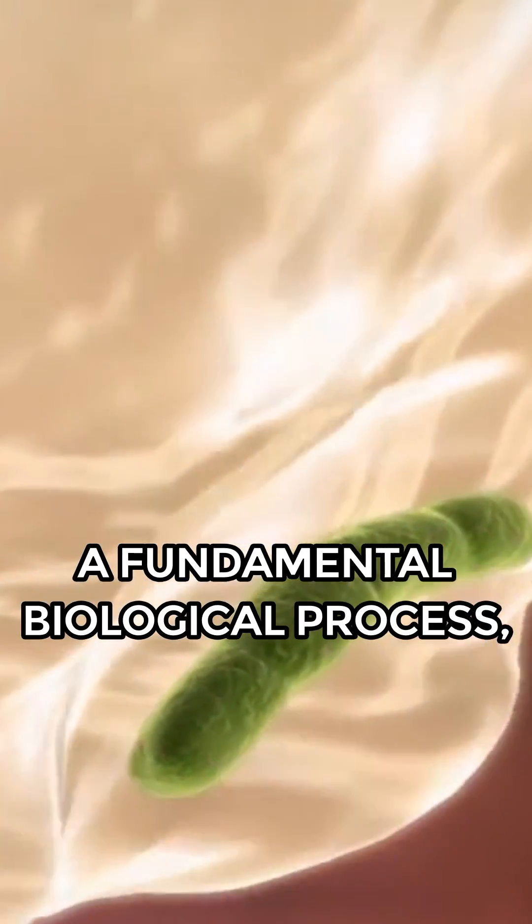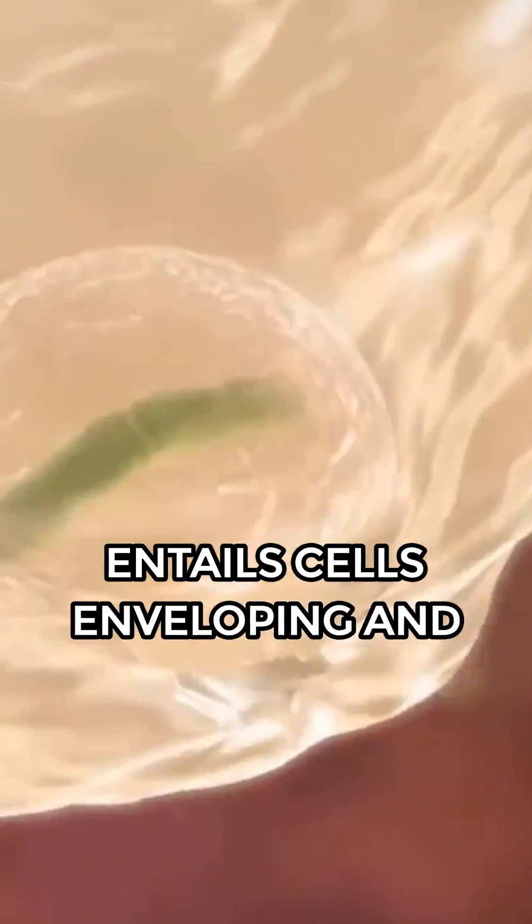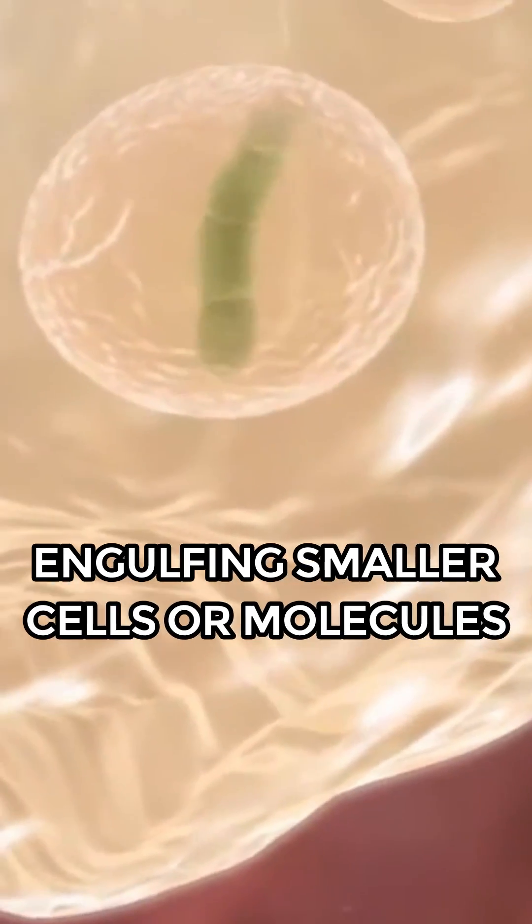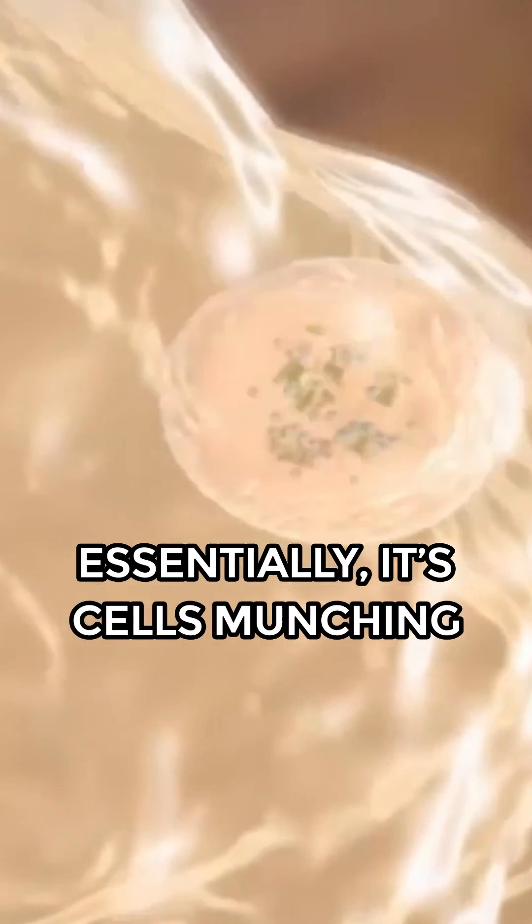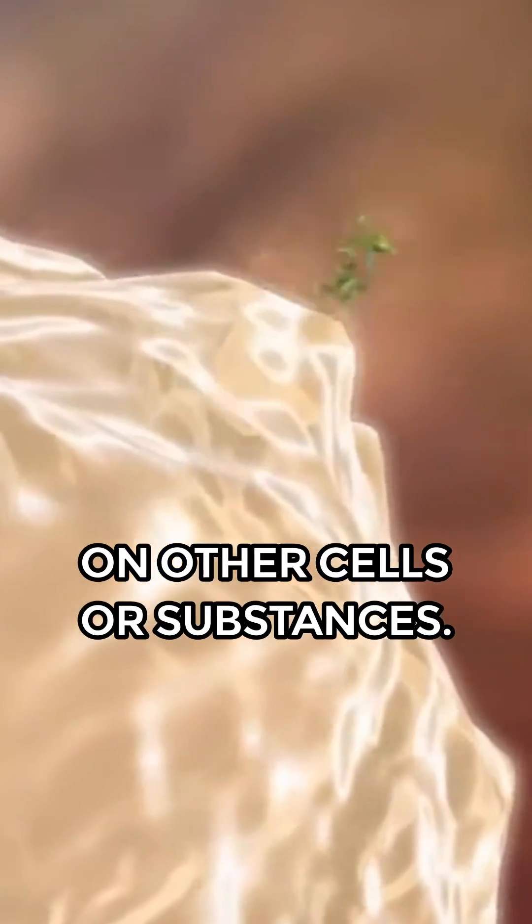Phagocytosis, a fundamental biological process, entails cells enveloping and engulfing smaller cells or molecules to eliminate them from the system. Essentially, it's cells munching on other cells or substances.